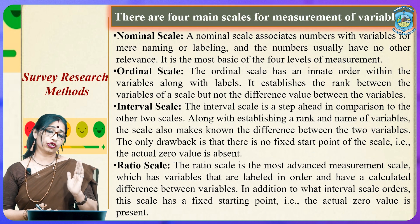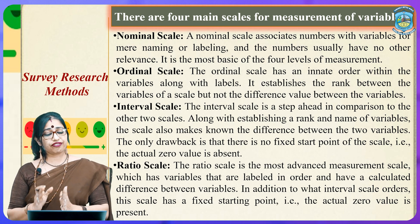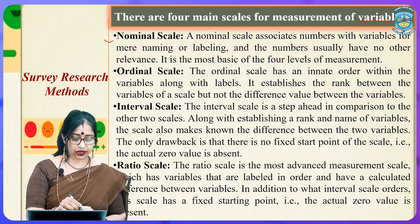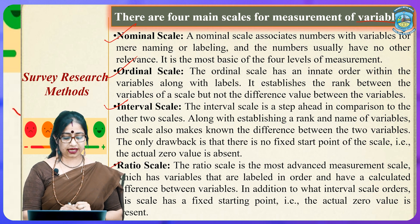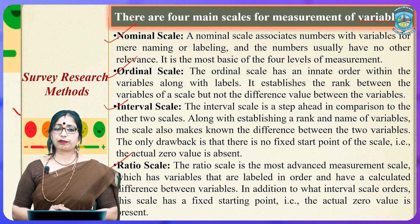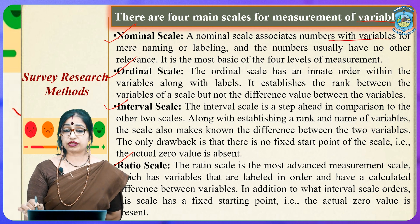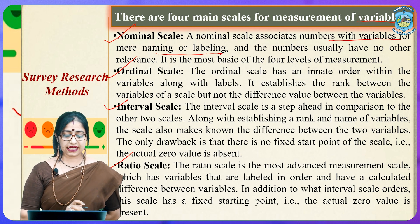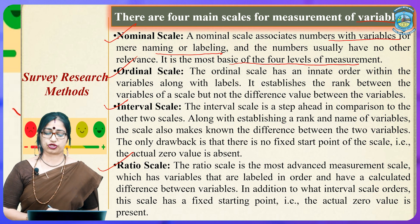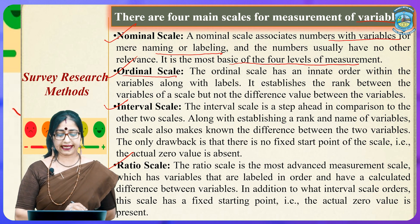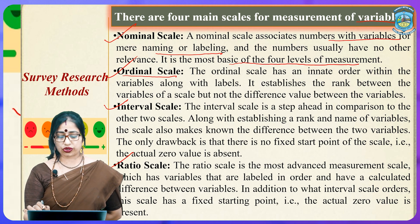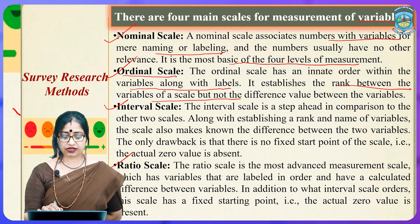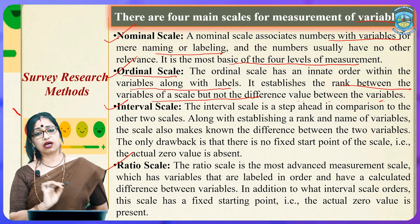When conducting survey research, different scales of measurement are used for variables. The nominal scale associates numbers with variables for mere naming or labelling, with numbers usually having no numeric relevance — it is the most basic of the four levels of measurement. The ordinal scale has an innate order within the variables along with labels. It establishes rank between variables but no difference value exists between the different variables.